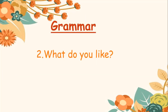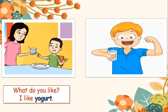Now let's move to the next grammar point. When we want to ask someone what they like, we use the question 'What do you like?' and the answer is 'I like...' For example, number one: What do you like? I like yogurt. Now repeat after me: What do you like? I like yogurt. One more time: What do you like? I like yogurt.